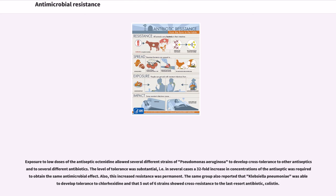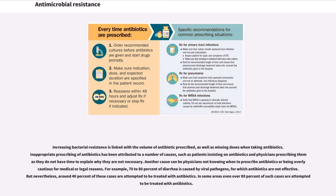The same group also reported that Klebsiella pneumoniae was able to develop tolerance to chlorhexidine, and that 5 out of 6 strains showed cross resistance to the last resort antibiotic Colistin. Increasing bacterial resistance is linked with the volume of antibiotic prescribed, as well as missing doses when taking antibiotics. Inappropriate prescribing of antibiotics has been attributed to a number of causes, such as patients insisting on antibiotics and physicians prescribing them as they do not have time to explain why they are not necessary. Another cause can be physicians not knowing when to prescribe antibiotics or being overly cautious for medical or legal reasons.